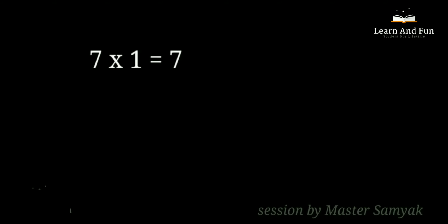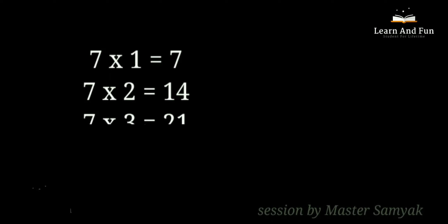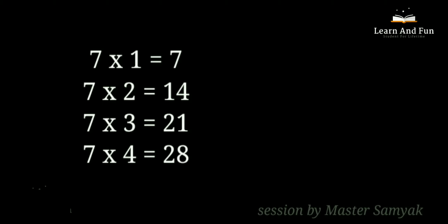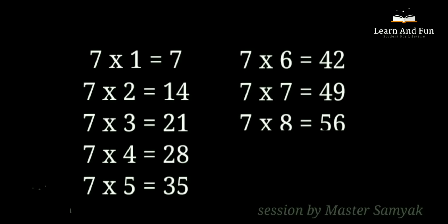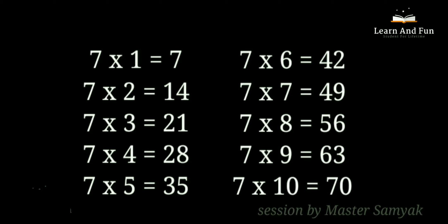Let's say it together. 7 ones are 7. 7 twos are 14. 7 threes are 21. 7 fours are 28. 7 fives are 35. 7 sixes are 42. 7 sevens are 49. 7 eights are 56. 7 nines are 63. 7 tens are 70.